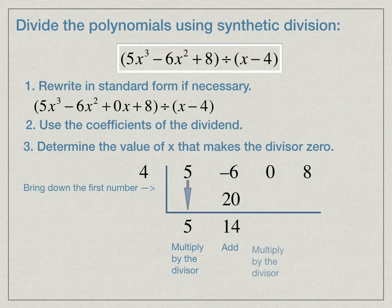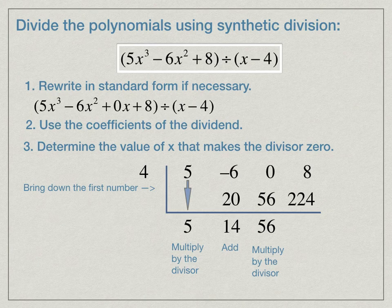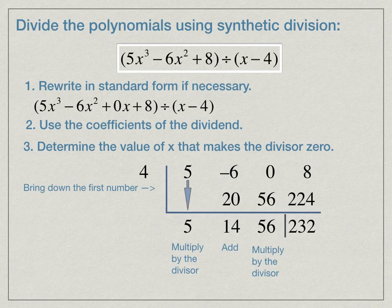We multiply the 14 by 4 again, and we get 56. We add those, and we continue this process. 56 times 4 is 224. We add 224 plus 8, that's 232. This last number is going to be our remainder.